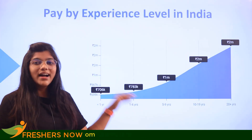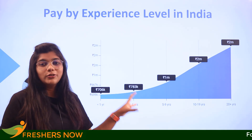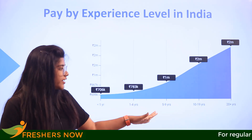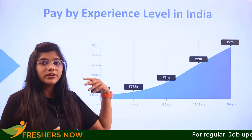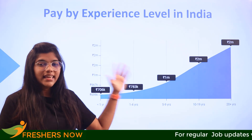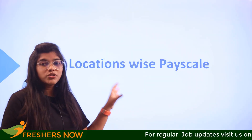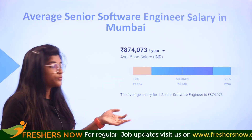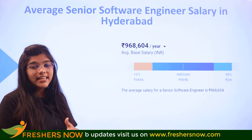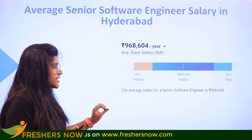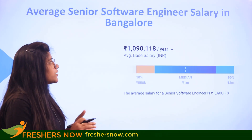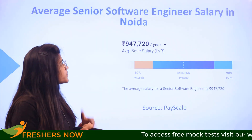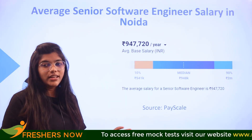That is quite a tempting reason to build your career in this field. Looking at the professional growth graph, there is an immediate growth from year one to year four, and further elevation from year four up to year ten. In terms of location-based salaries in India: Mumbai pays 8 lakhs 74,000; Hyderabad 9 lakhs 68,000; Bangalore 10 lakhs per annum; Pune 9 lakhs 90,000; and Noida 9 lakhs 47,000 per annum.